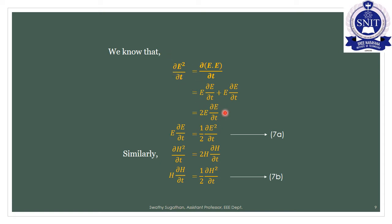For magnetic field intensity: ∂/∂t(H²) = 2H · ∂H/∂t, so H · ∂H/∂t = ½ ∂/∂t(H²). From equation number 6, E · ∂E/∂t = ½ ∂/∂t(E²) and H · ∂H/∂t = ½ ∂/∂t(H²). These are equation number 7a and 7b.